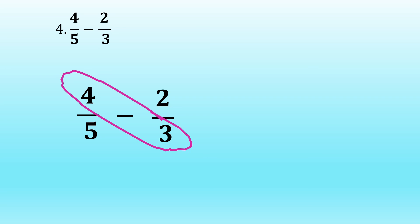Our fourth example is four-fifths minus two-thirds. To draw our butterfly, we multiply four times three, which is equal to twelve, and five times two, which is equal to ten. And our operation is subtraction, so twelve minus ten.